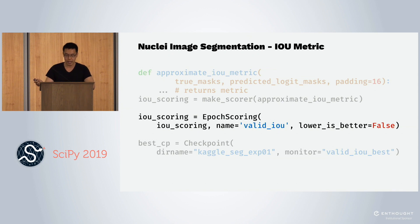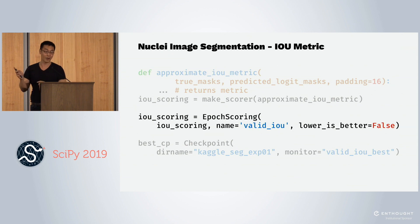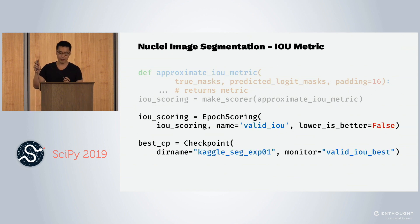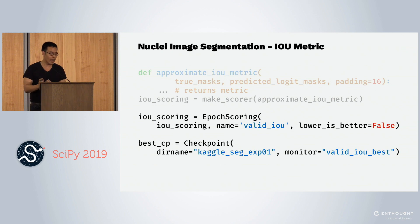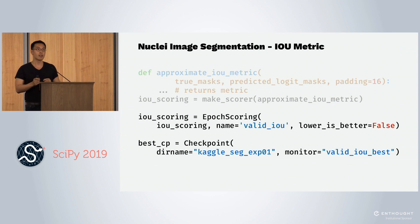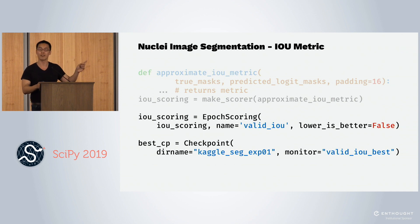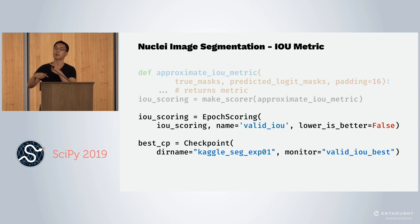We define an epoch scoring object and set lower_is_better to False. The name is called valid_IOU. For checkpointing, we set the monitor to validation_IOU_best. Notice this feature of having a directory name — every time you change your neural network, all you have to do is change the directory name to track experiments across different neural networks. They checkpoint to different folders so they don't overwrite each other.